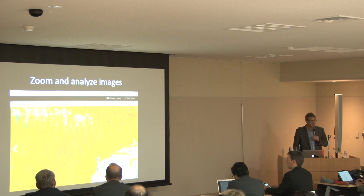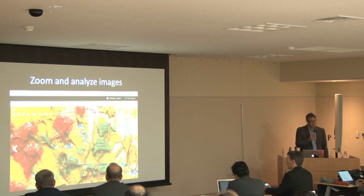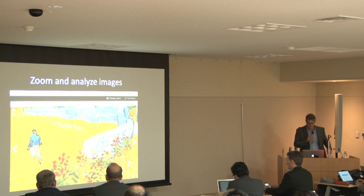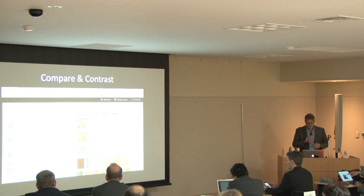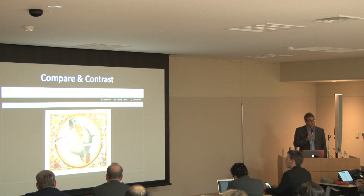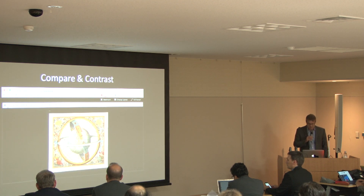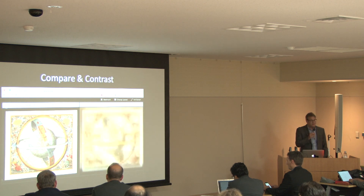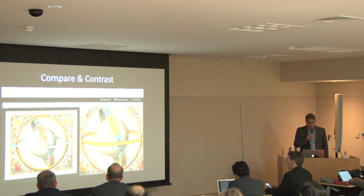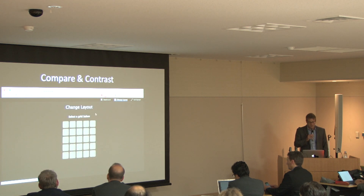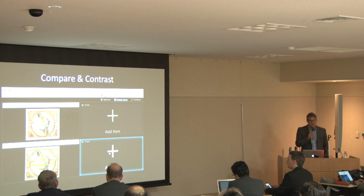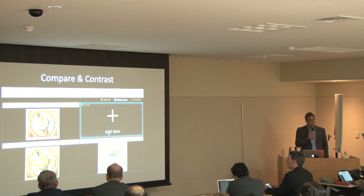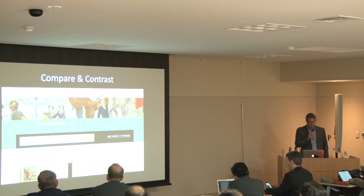Mirador excels at basic viewing — allowing users to zoom deeply into the finest detail of color and texture. The major innovation distinguishing Mirador from other viewers is the ability to compare images in the same workspace. You can open multiple images — here, celestial maps from Stanford — zoom, pan, and compare details. You can create a 2x2 grid layout and add content from other institutions, such as dragging a celestial map from the Bodleian at Oxford into the fourth window for comparison.